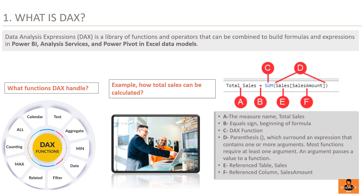DAX is also used for calculated columns — adding new data to the table where a DAX formula defines the value of the new column. For example, you can calculate profit as a new column in a product table by subtracting the product's cost from its selling price. Additionally, DAX supports custom tables, which are tables created from other tables, thereby helping to create a more focused and business-oriented view of data.